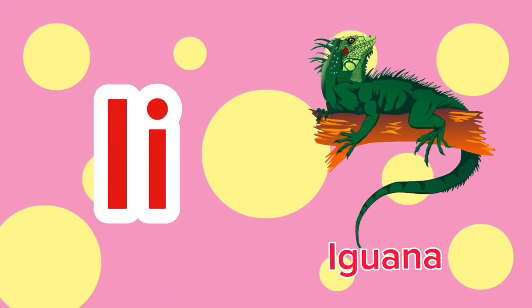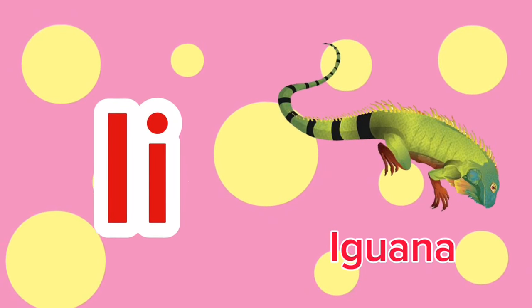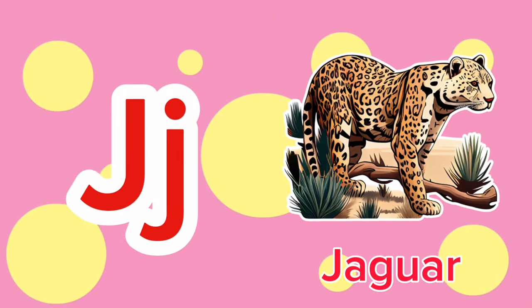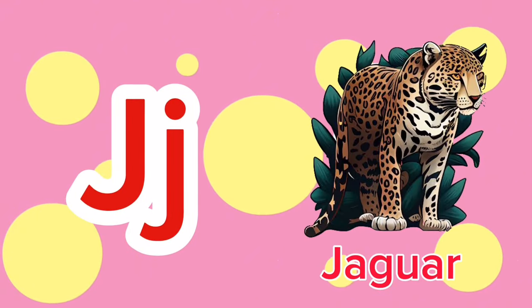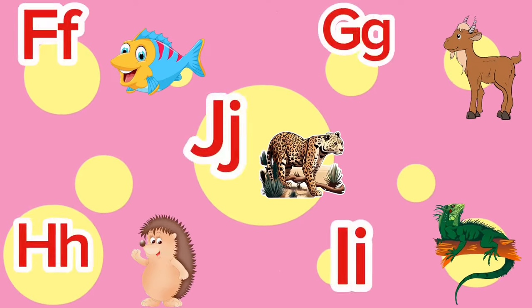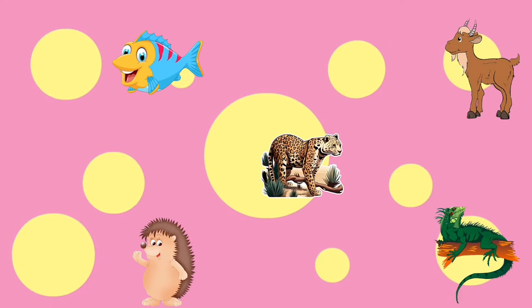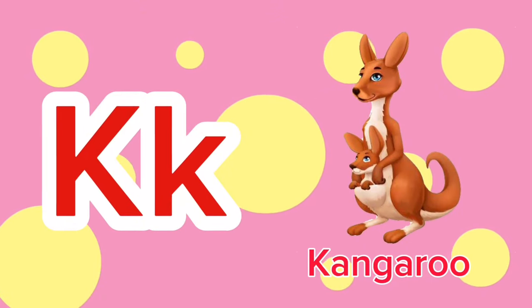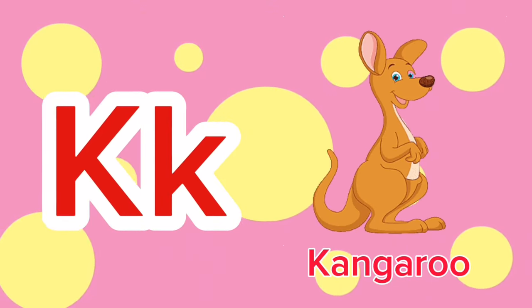I is for Iguana. I-i-iguana. I is for Iguana. I-i-i. J is for Jaguar. J-j-jaguar. J is for Jaguar. J-j-j. K is for Kangaroo. K-k-kangaroo. K is for Kangaroo. K-k-k.